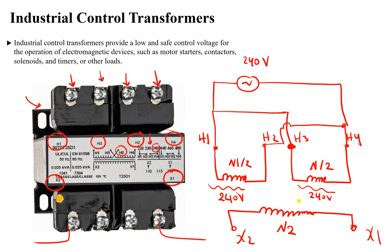Now let's find the voltage on the secondary. The ratio V2/V1 equals the number of turns of the secondary, N2, divided by the number of turns of the primary — which is N1/2 for either of the two parallel coils. Applying this rule, V2 equals V1, which is 240 volts, multiplied by N2 divided by N1/2.